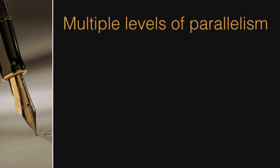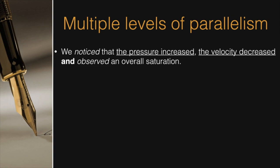Sometimes there are multiple levels of parallelism, and they should be so distinguished. For example, we noticed that the pressure increased, the velocity decreased, and observed an overall saturation. In this sentence, the two ideas that are underlined are in a parallel form. But the way the sentence is written, the reader expects as if the third idea after and is also a part of this parallel form. However, it is not.